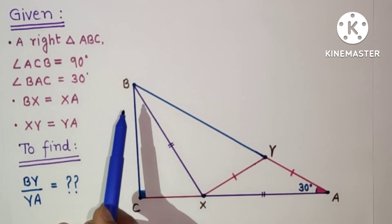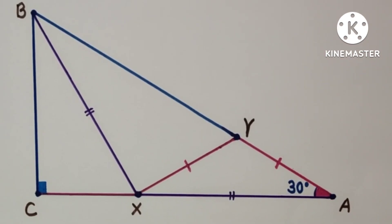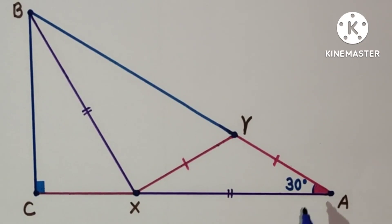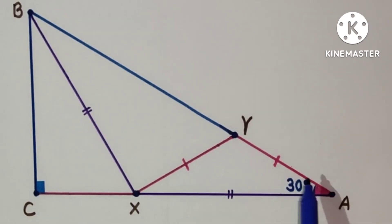So we have to find the ratio between the line segment BY and YA. So what is the value of BY upon YA that is to be found. In this question this is 30 degrees and XY is equal to YA.